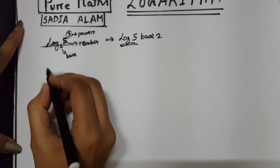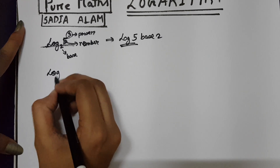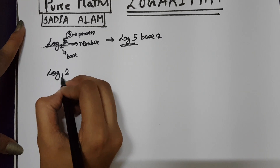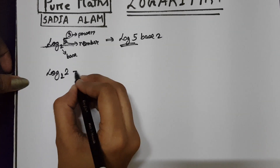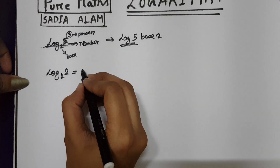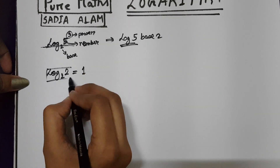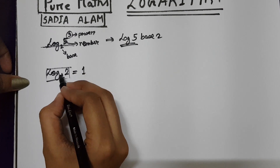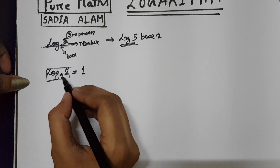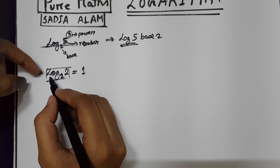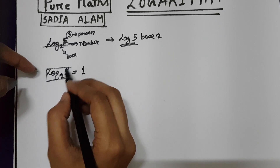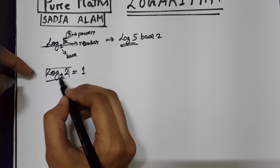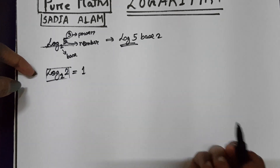Suppose you have log 2 base 2. If the base and the number of the log are the same, then the entire term will become 1. It doesn't matter what the base and number are — if I write log 5 base 5, the number will become 1. If both the number and base are identical, the total term becomes 1.